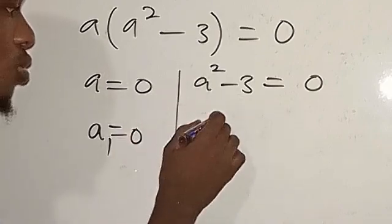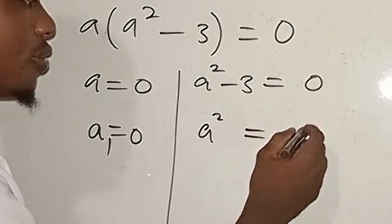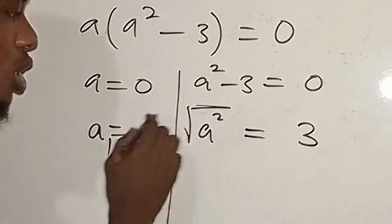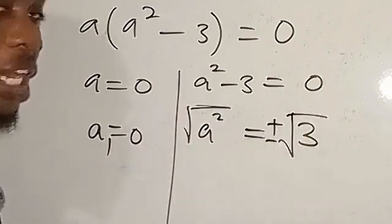We have a². We transpose this 3 to the other side, we have a² = 3. To get rid of this, you take the square root of both sides, and this will be plus or minus.